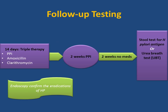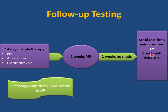Follow-up testing after treatment: if triple therapy is given for two weeks (e.g., PPI, amoxicillin, clarithromycin), then give another two weeks of PPI only without antibiotics. Afterward, wait another two weeks before performing follow-up testing. Follow-up can be done with stool antigen test or urea breath test. The test must be two weeks from the last dose of PPI and four weeks from the last dose of oral antibiotic for accuracy.